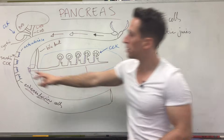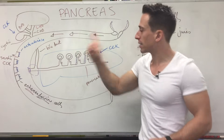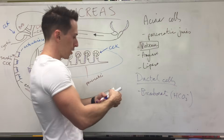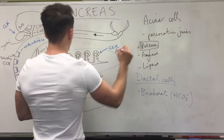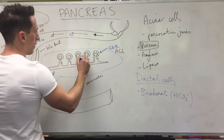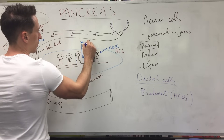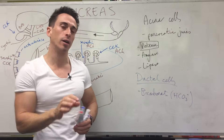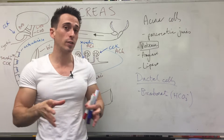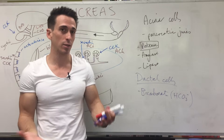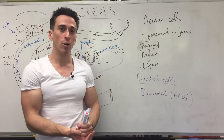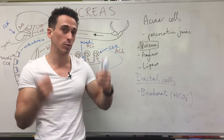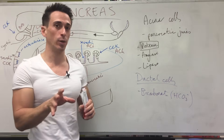In addition to secretin and CCK, acetylcholine also stimulates both intercalated ductal cells and acinar cells. Acetylcholine is a neurotransmitter and is the most pronounced neurotransmitter of the parasympathetic nervous system, which innervates the GI tract and tells it to start secreting substances — it's the 'rest and digest' part of the autonomic nervous system. The enteric nervous system, comprised predominantly of the vagus nerve, releases acetylcholine and helps stimulate this process.